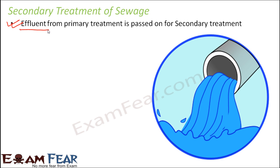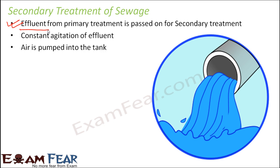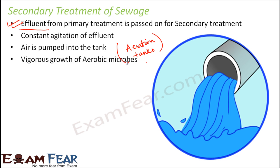During secondary treatment, there is constant agitation of the effluent. The effluent is passed on to different tanks which are termed aeration tanks. They are called aeration tanks because air is constantly pumped into the tank. So the effluent received from the primary treatment is passed to these tanks where air is constantly pumped in and the effluent is constantly agitated. As a result, vigorous growth of aerobic microbes takes place because air is being pumped in.